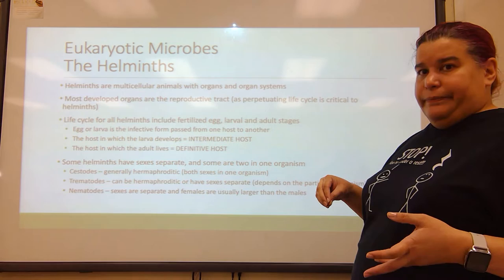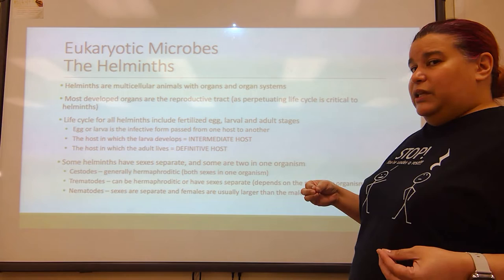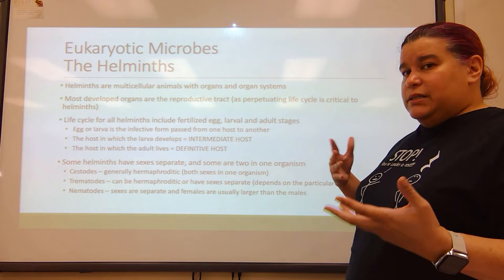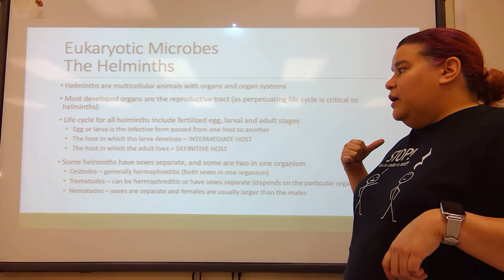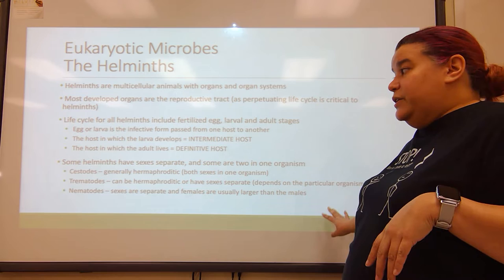The egg or the larva is the infective form — it's passed from one host to another. The host in which the larva develops is called the intermediate host. The host in which the adult lives is called the definitive host. Some helminths have sexes that are separate; some are basically two sexes in one organism, meaning male and female are in the same organism. Cestodes are generally hermaphroditic. Trematodes can be hermaphroditic or have separate sexes, depending on the particular organism.